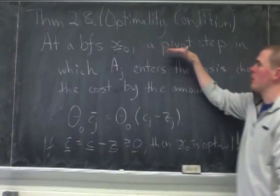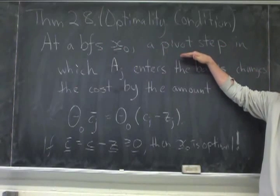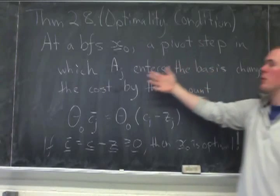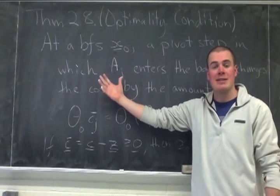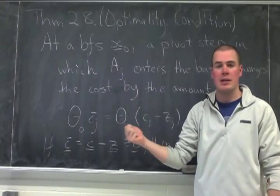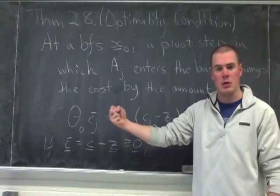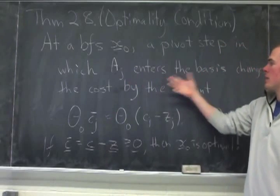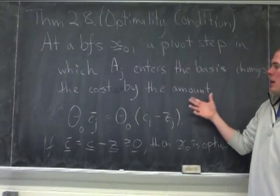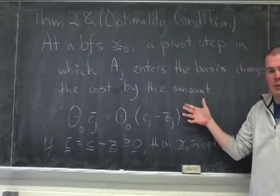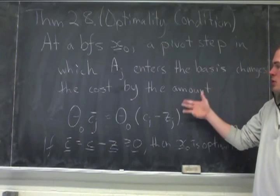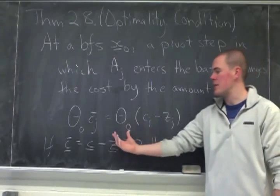And I'm going to perform a pivot step. So remember a pivot step is I'm going to take a column from my matrix which isn't in the basis, and I want to bring it into the basis and drop something out. So I'm moving from a BFS to a new BFS, and I want it to enter the basis, and I want to say that I know what happens to the cost. So when I do this, I want to change the cost by this amount. So theta 0, remember.